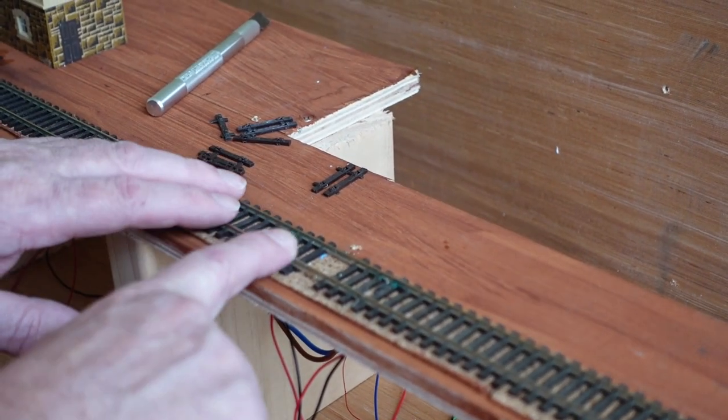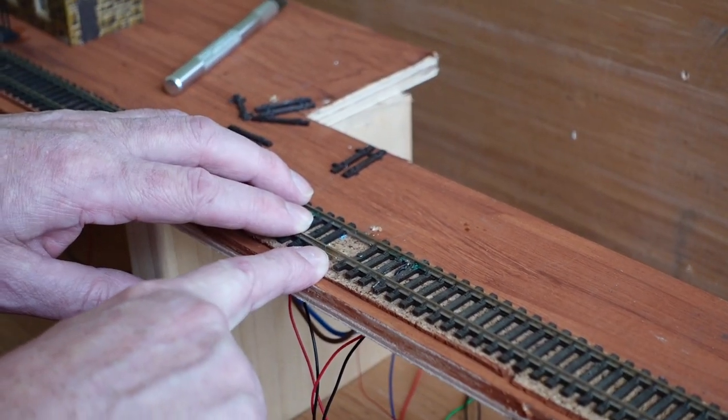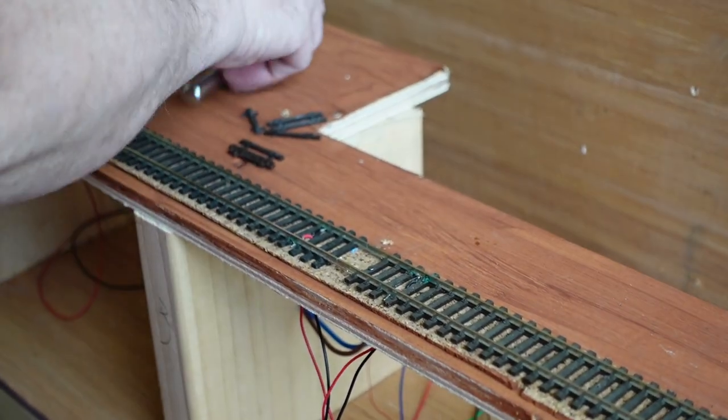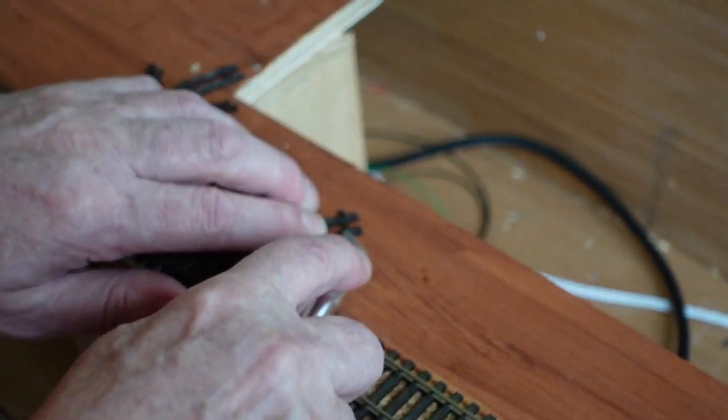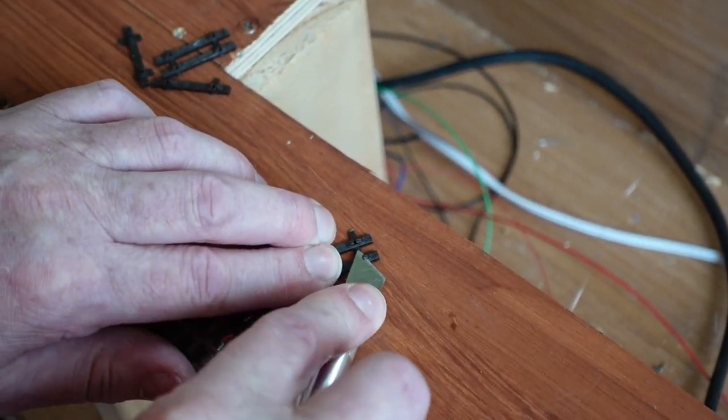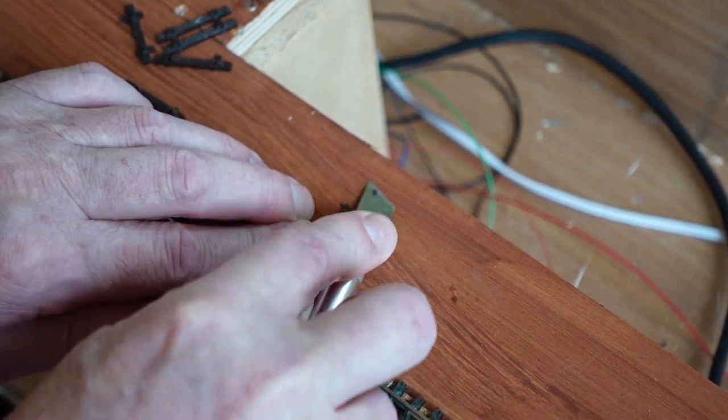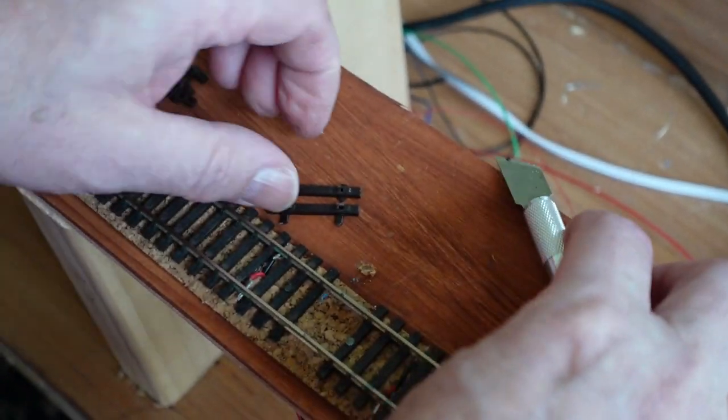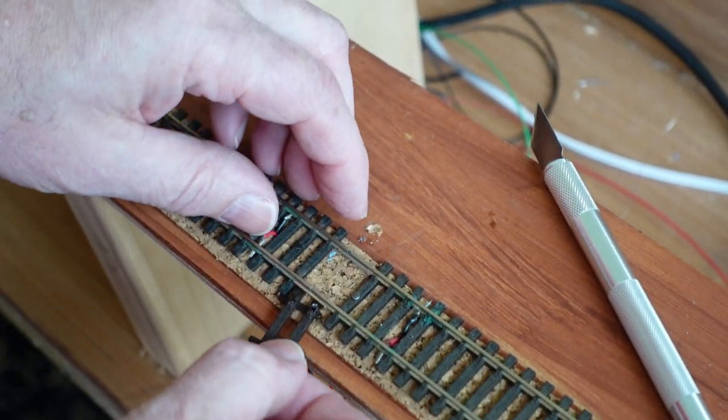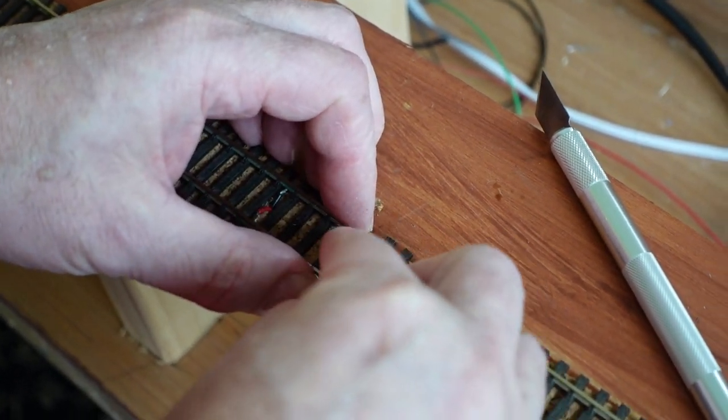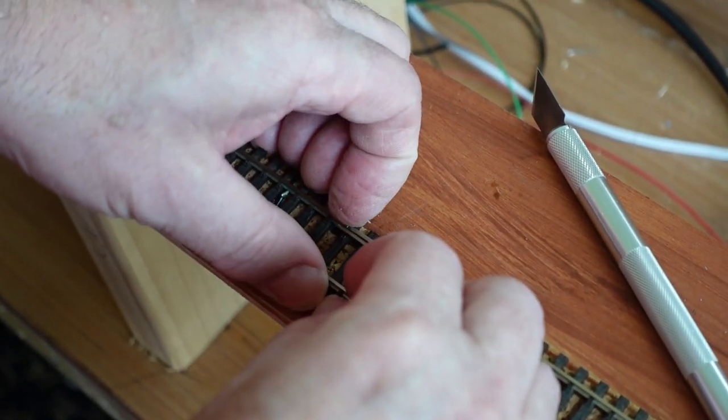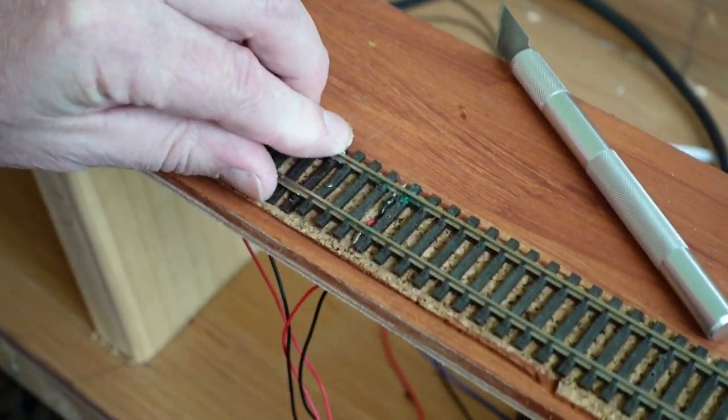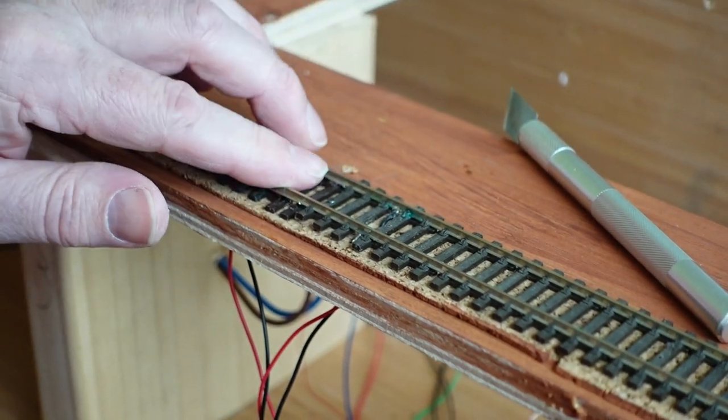Before we start, we've got a couple of gaps here where the flexi-tracks join together, so we need to fill that in. We get some old sleepers and trim off the plastic chairs using a sharp knife. Always remember to cut away from yourself. Just like that, then slide them in and make sure they're sat down properly. It's not causing the track to bend and that looks fine.